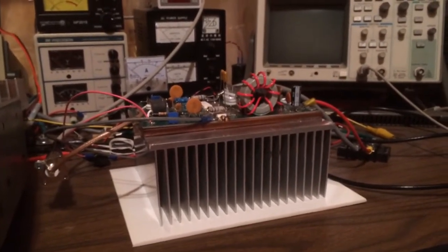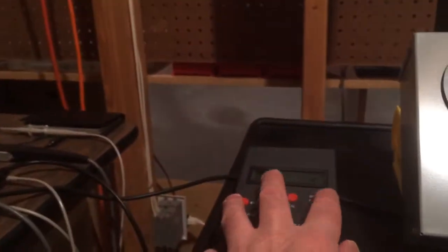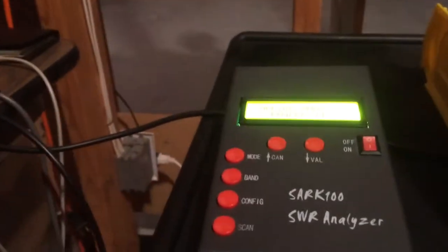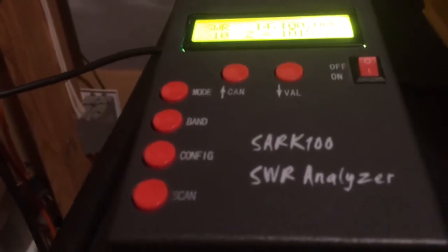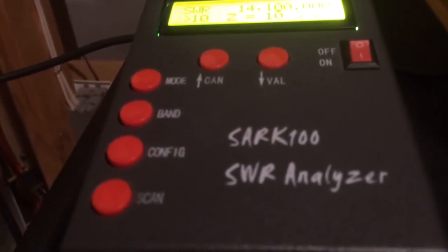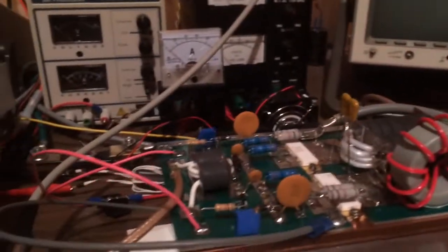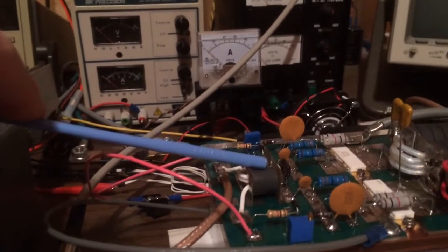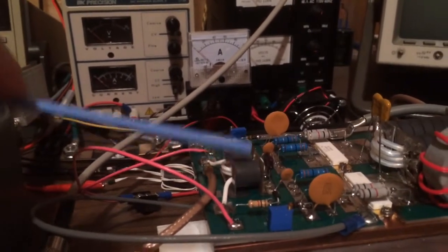So I decided to try the same thing. So I have here a Stark 100 antenna analyzer and I went ahead and scanned the input of my amplifier. Okay so here's my input side. This is the input transformer.